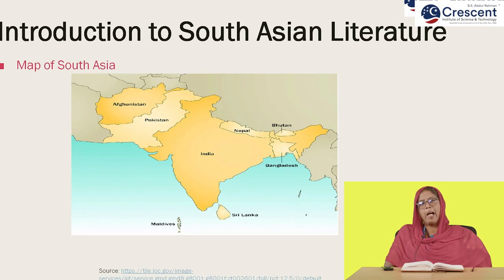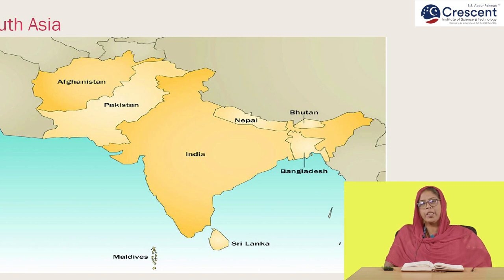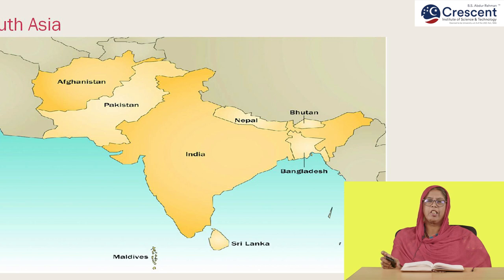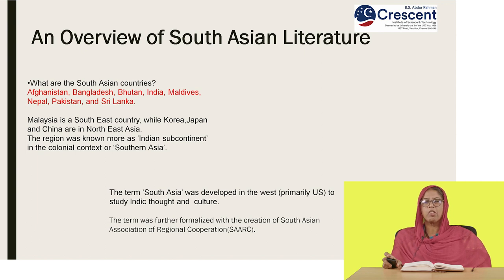Now look at this map. This is the map of South Asia — you can see the countries which are called South Asian countries. The South Asian countries are Afghanistan, Bangladesh, Bhutan, India, Maldives, Nepal, Pakistan, and Sri Lanka. In the syllabus, you will also read some of the works of Malaysian, Chinese, Korean, and Japanese writers.